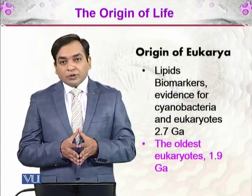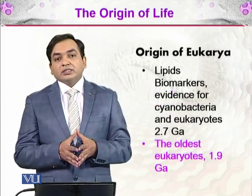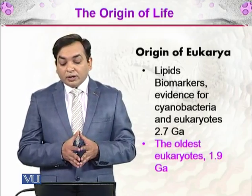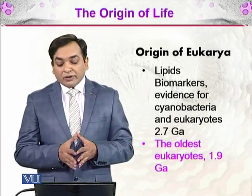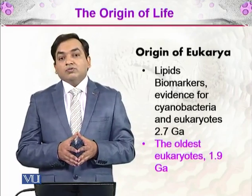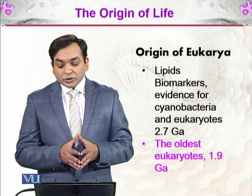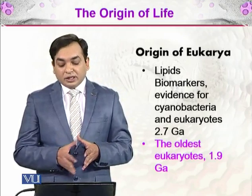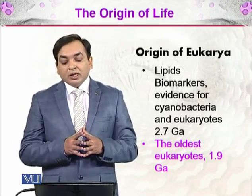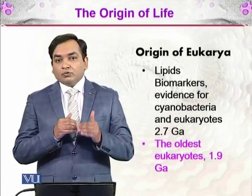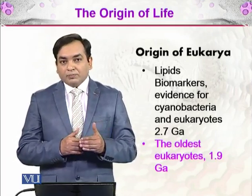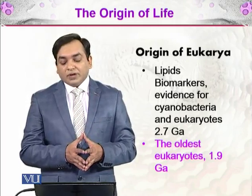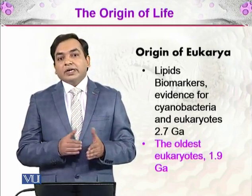Then comes the origin of eukarya. Eukarya, as the name indicates, are the eukaryotes — organisms having a true nucleus. Based on lipid biomarker evidence, the origin of eukaryotes dates to almost 2.7 giga annum, meaning cyanobacteria were present 2.7 GA ago. The oldest definitive eukaryote fossils date to 1.9 giga annum.